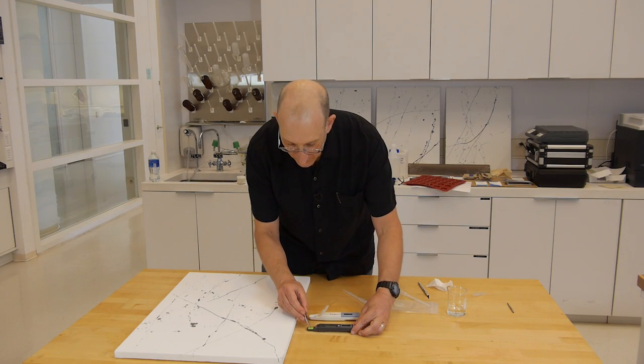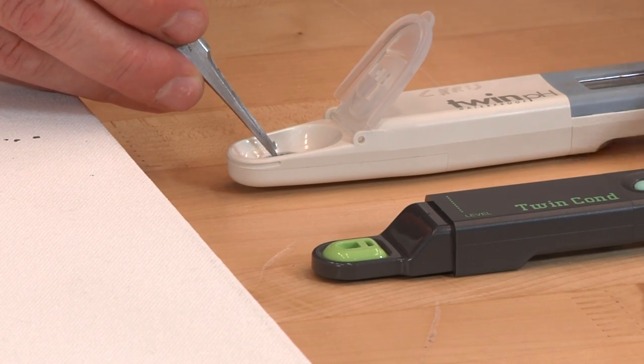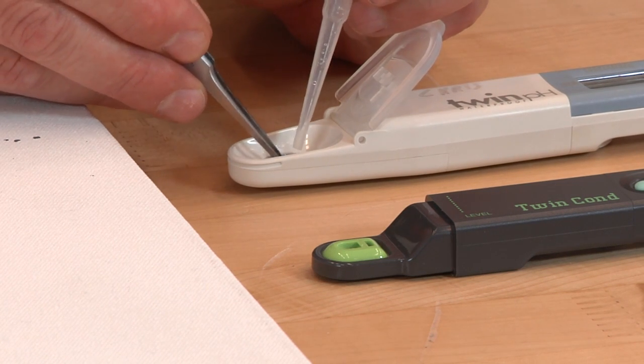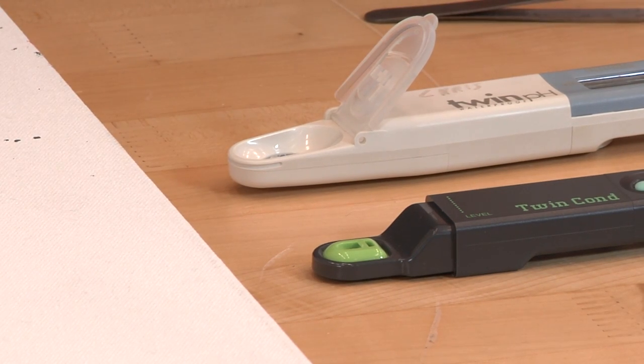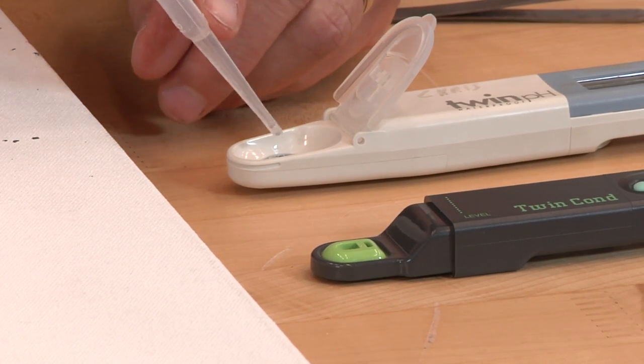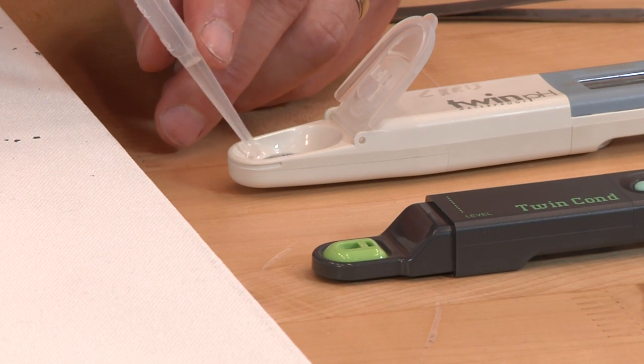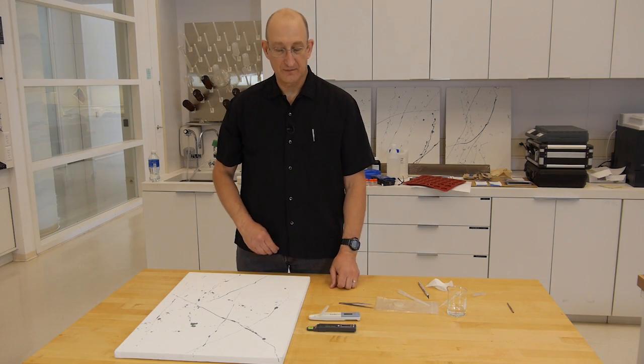After we get our reading, we remove the plug from the conductivity meter and transfer it to the pH meter. And add a drop of distilled or deionized water to bridge between the reference and measuring electrode with the plug in the middle. And we get our pH reading.